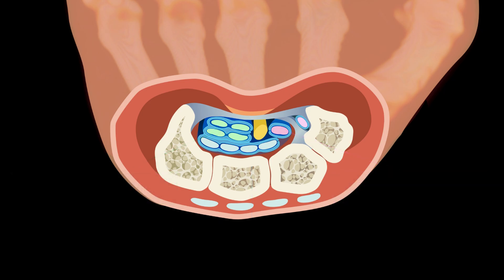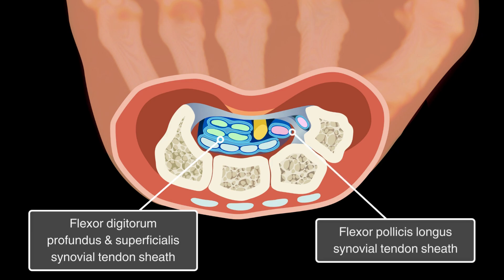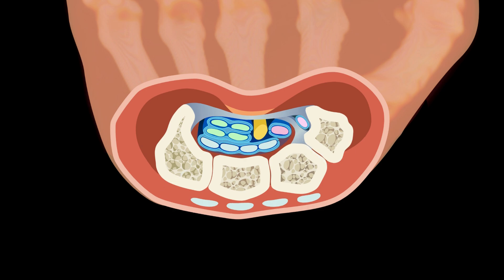The tendons can move freely within the carpal tunnel due to their synovial tendon sheaths. One sheath encloses all eight tendons of the flexor digitorum profundus and the flexor digitorum superficialis, and another sheath encloses the remaining flexor pollicis longus tendon. The median nerve is not enclosed within a synovial sheath.